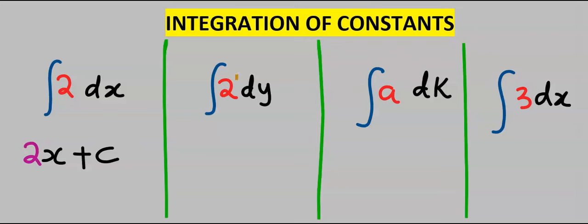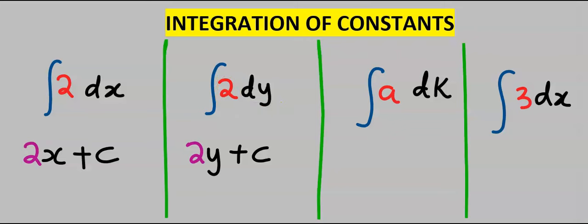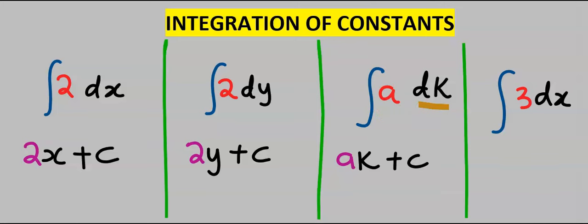Next, we integrate 2 with respect to y and we have 2y plus C. We then integrate constant a with respect to k and we have ak plus C. Finally, integrating the constant 3 with respect to x gives us 3x plus C.